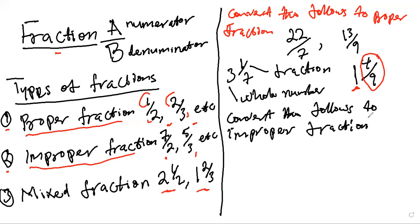So I'm converting the following into improper fraction. So what do we have? We have three and one over seven, and we have three and — we have twelve and one over two. So look at these fractions. The first one, you have three and one over seven — the fractional part is one over seven and the whole part is three.